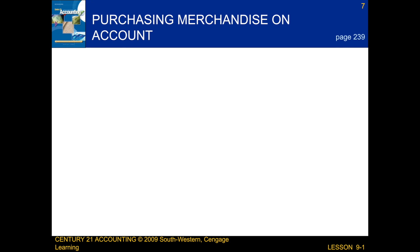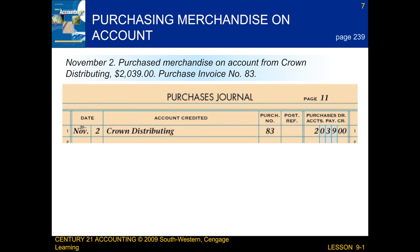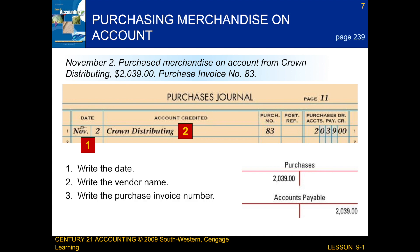Next we're going to be talking about purchasing merchandise on account. This transaction reads: on November 2nd, purchased merchandise on account from Crown Distributing, $2,039, purchase invoice number 83. When we record a transaction related to purchasing merchandise on account, there are a few steps we follow. First, we write the date. Next, we write the vendor name. After that, we write the purchase invoice number. And finally, we write the amount of the invoice.